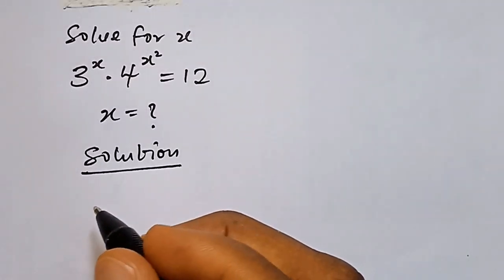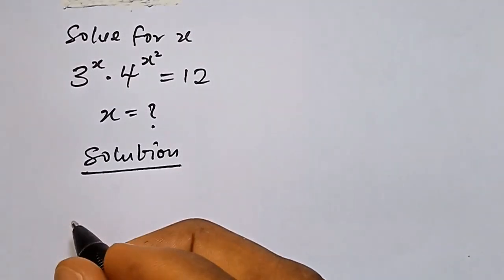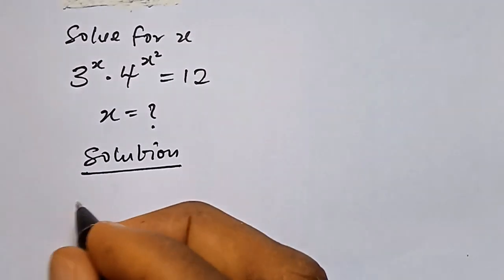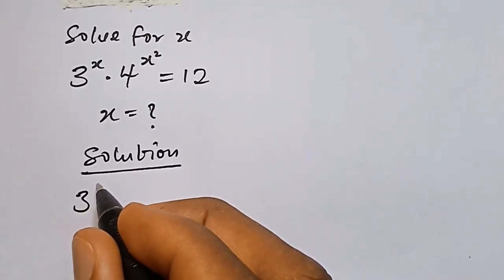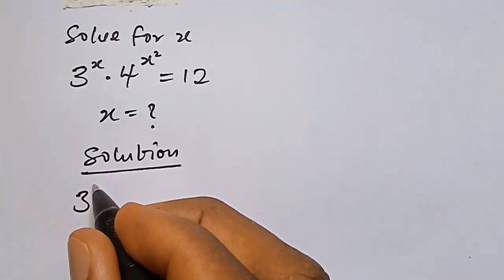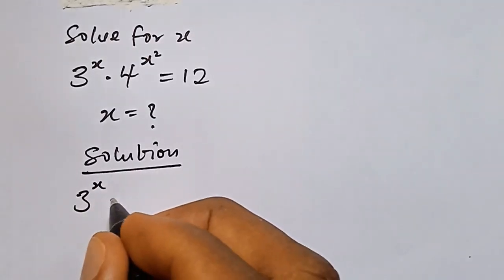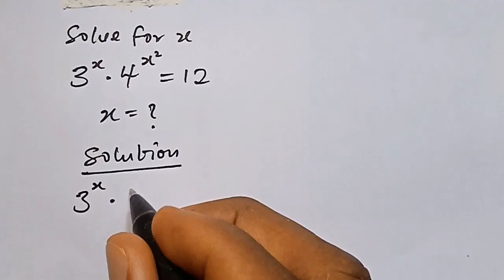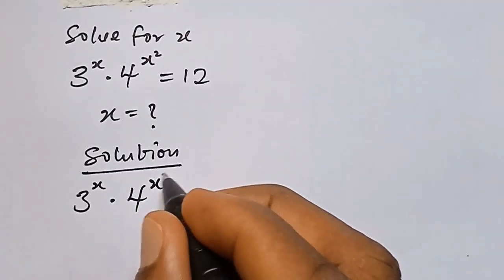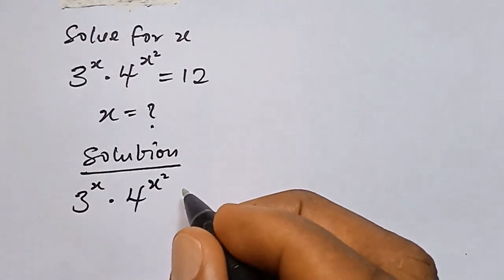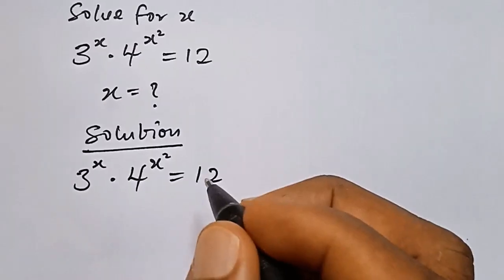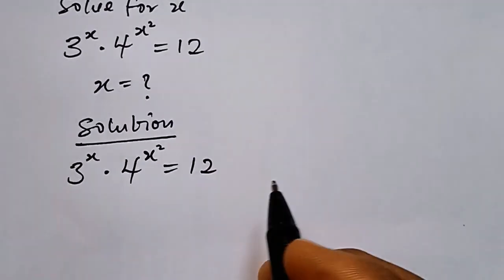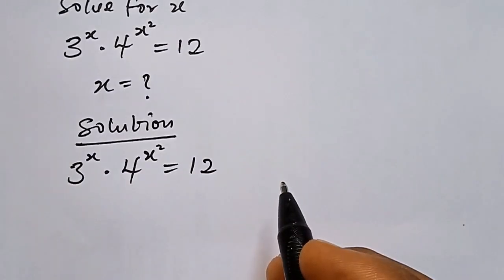Hi everyone, let's solve for X. From our expression we have 3 raised to power X multiplied by 4 raised to power X squared equals 12. So we'll express all constants with prime bases.